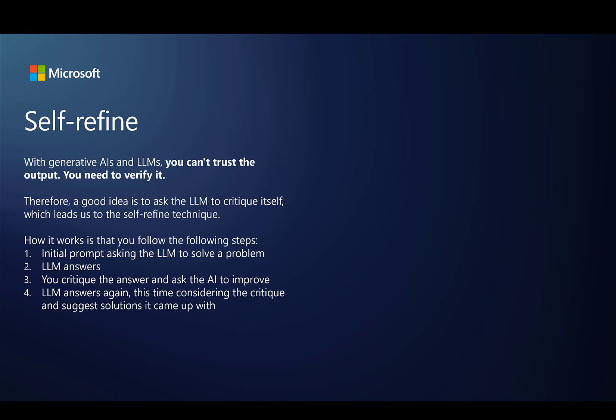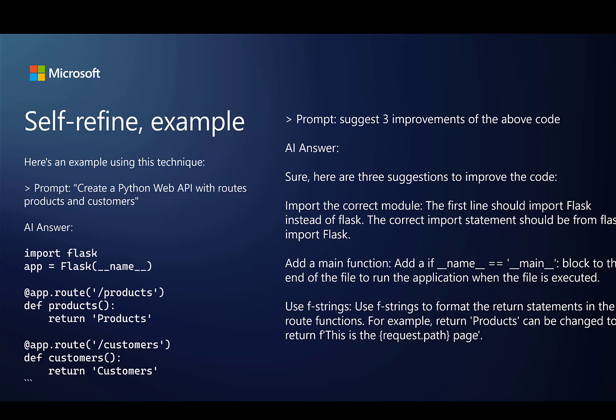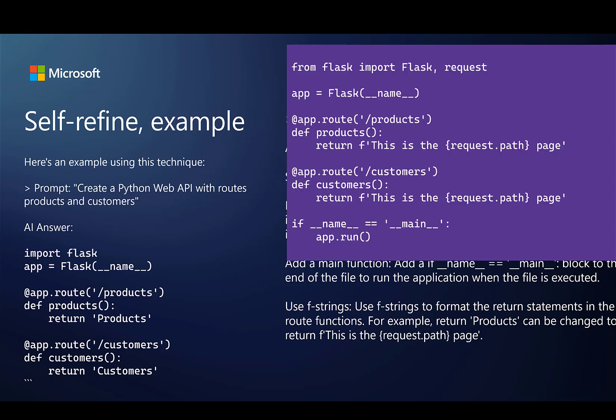Self-refine is an important technique because it allows you to improve the answers from the LLM gradually. For example, if you have a piece of code, you can ask it 'can you improve my code to make it more maintainable?' or 'can you improve my code to improve its security?' Here you can see how we're asking the LLM to generate something in Python, and we get a first response. If you look on the right side, we want it to suggest three different improvements — Copilot Chat is saying yes, it can suggest all three — and then you arrive not only with how to improve things but also an improved set of code. Definitely check out the written lesson as well for more details on these various principles.